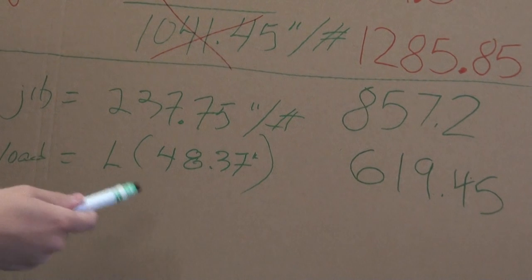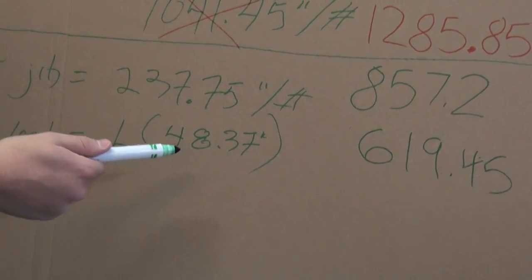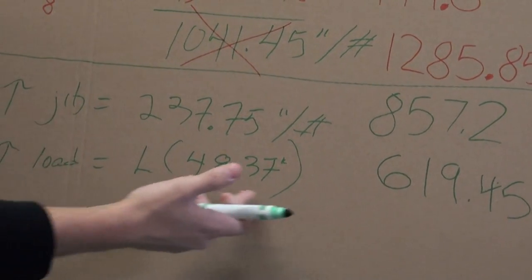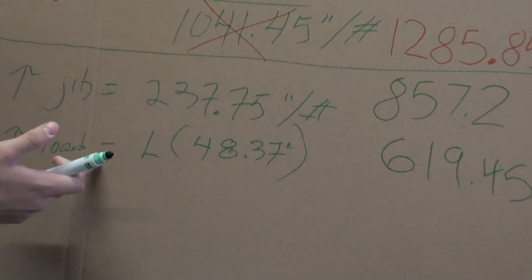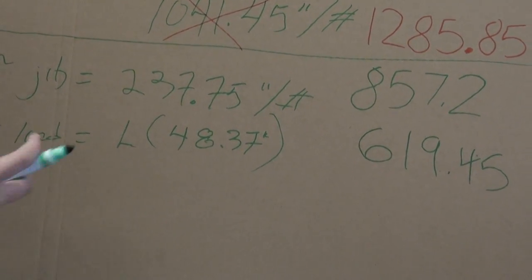It's the load times the distance. We know the distance is 48.37, so to get our weight alone we just divide both sides by 48.37 and we get...